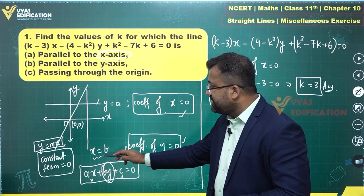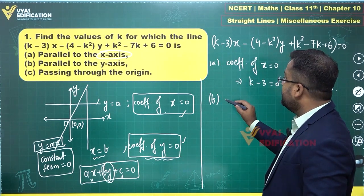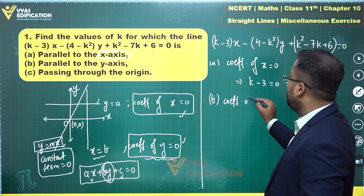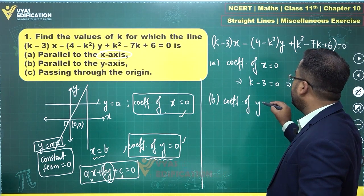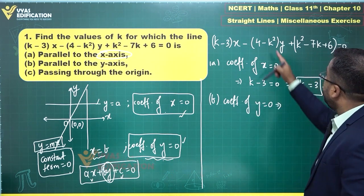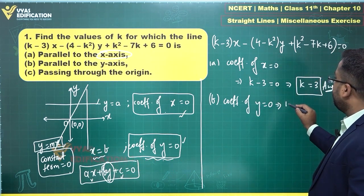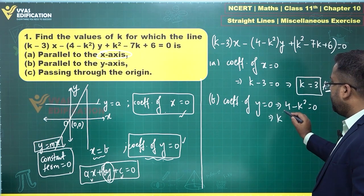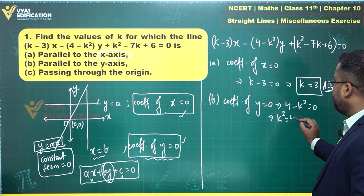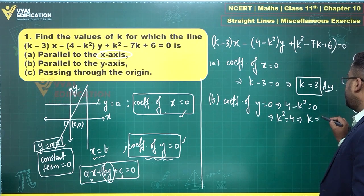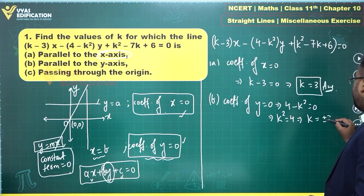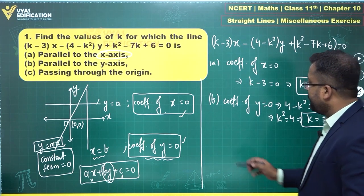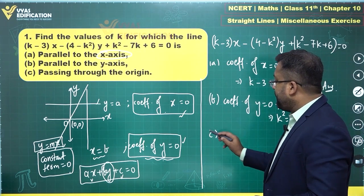For part (b), line parallel to the y-axis — coefficient of y = 0, so 4 − k² = 0, which gives k² = 4, therefore k = ±2. There are two possible values: k = +2 or k = −2.